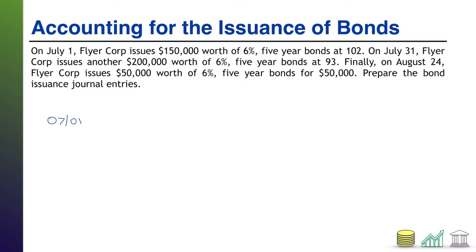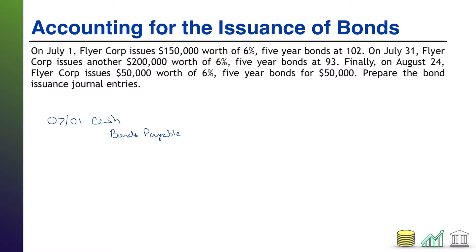Because we are issuing bonds, we know we're going to get cash. We also know that we are going to record a liability for those bonds called bonds payable. Bonds payable is always recorded at the face value of those bonds — that is what you are telling investors you will pay back at maturity. So bonds payable in this case is $150,000.